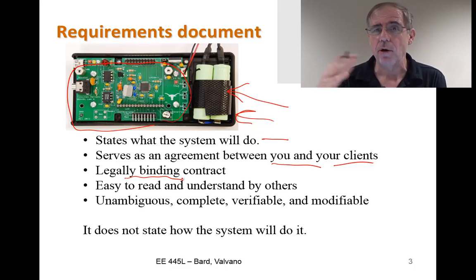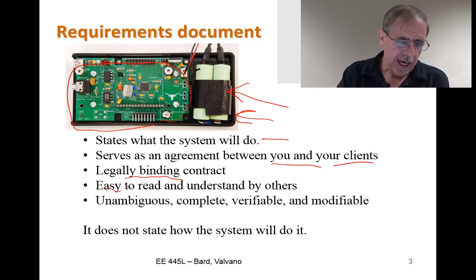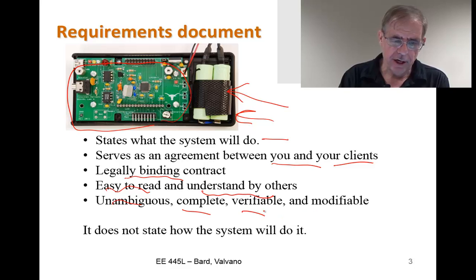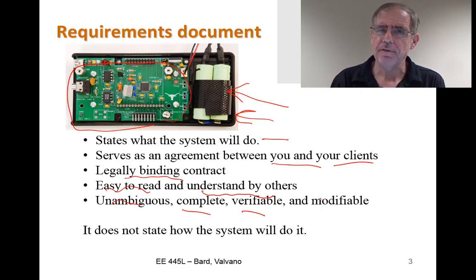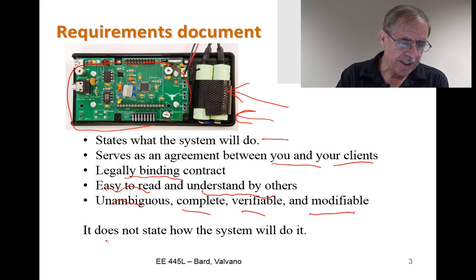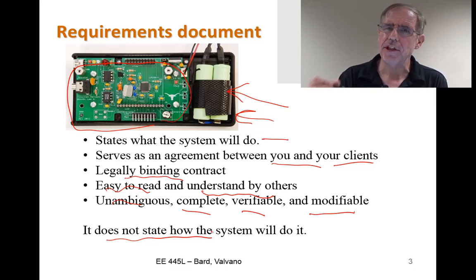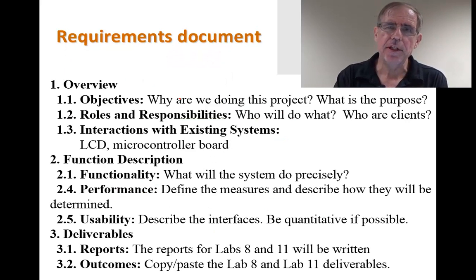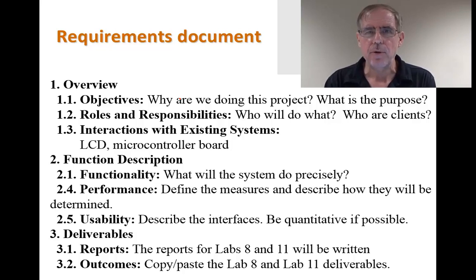We're going to see this requirements document over and over again this semester. As we said before, it has to be easy to read, it has to be easy to understand, it has to be unambiguous, totally clear, complete, verifiable, and more interesting is modifiable. So when we come up with a roadblock, we're not going to beat our heads against the wall — we're going to redefine the problem so that we can solve it. But it doesn't say how it's going to work. That's your job as an engineer to make it work. And these are the components of the requirements document.